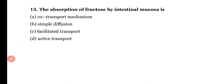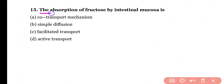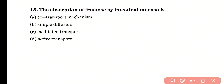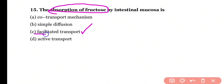Question 15. The absorption of fructose by intestinal mucosa is done by — co-transport mechanism, simple diffusion, facilitated transport, or active transport? Correct answer is option C. The absorption of fructose by intestinal mucosa occurs by the process of facilitated transport.